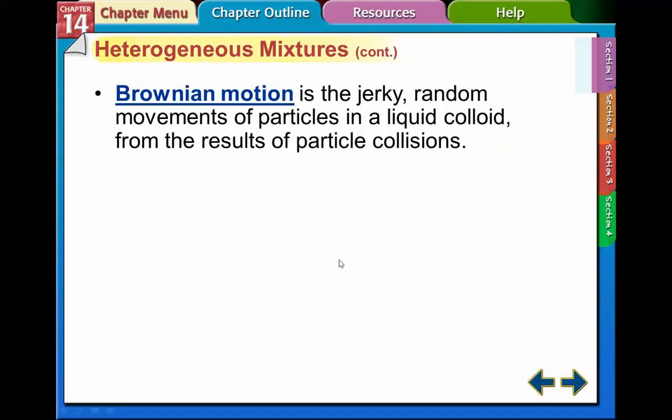Brownian motion is the jerky, random movement of particles in a liquid colloid that results from particle collisions. In a liquid colloid, the particles bounce into each other, similar to what we saw in gas simulations where gas particles bounced into each other. That's what Brownian motion looks like, and it happens in liquid colloids.